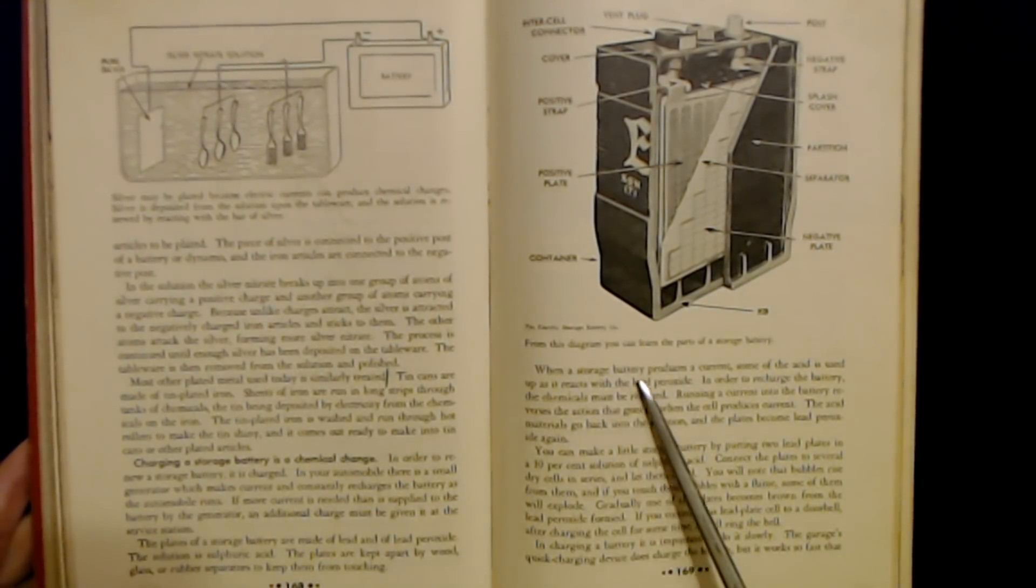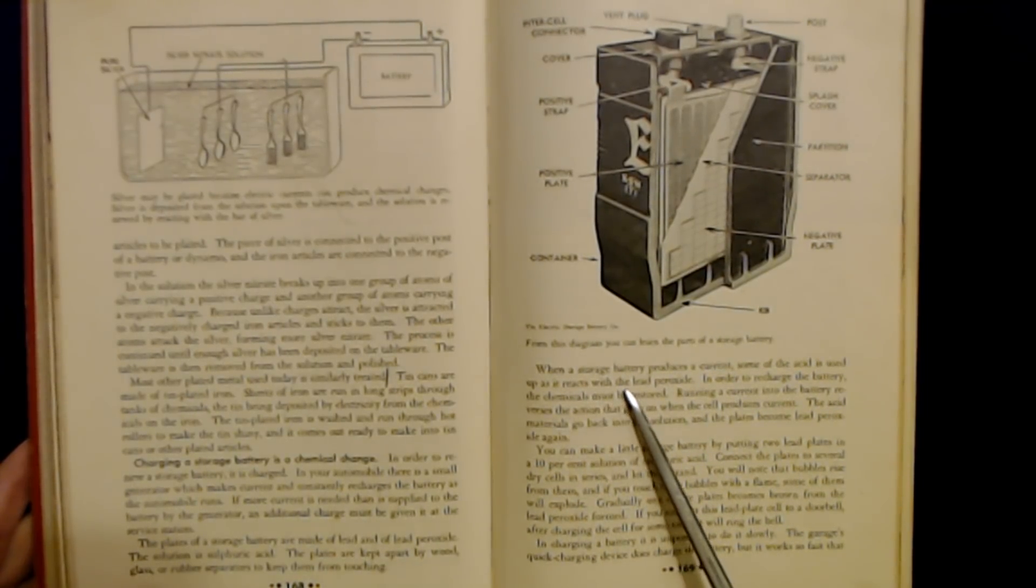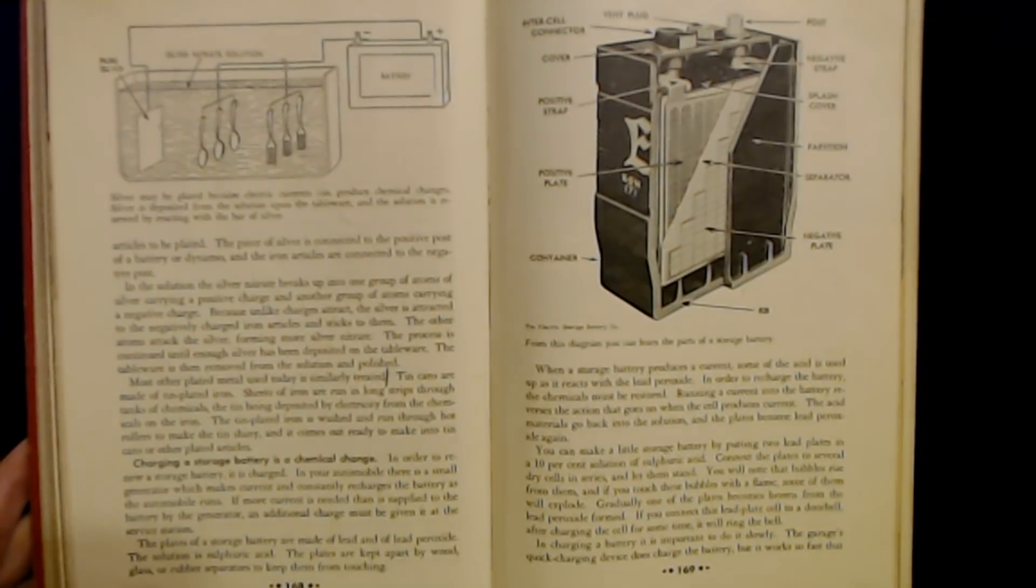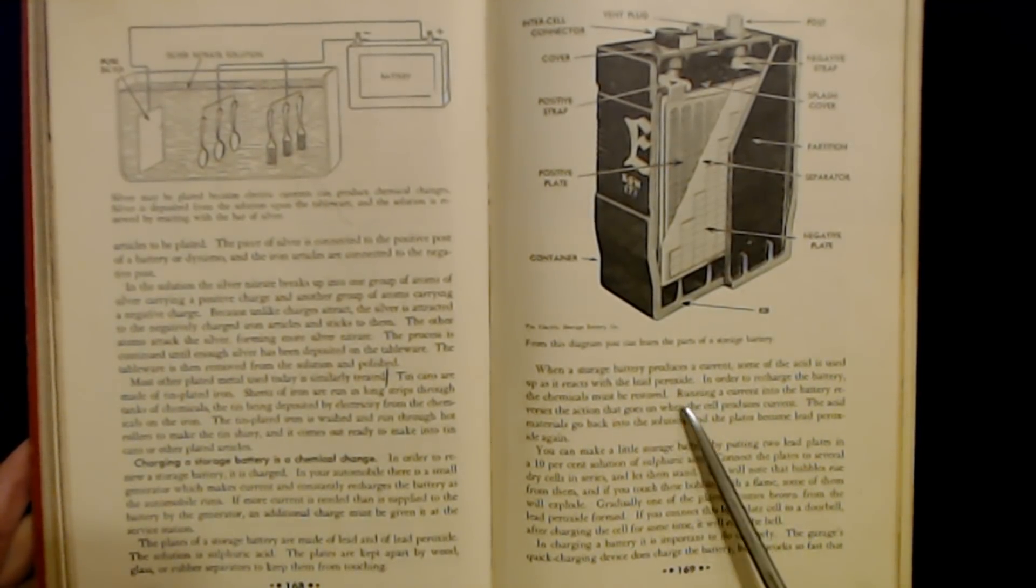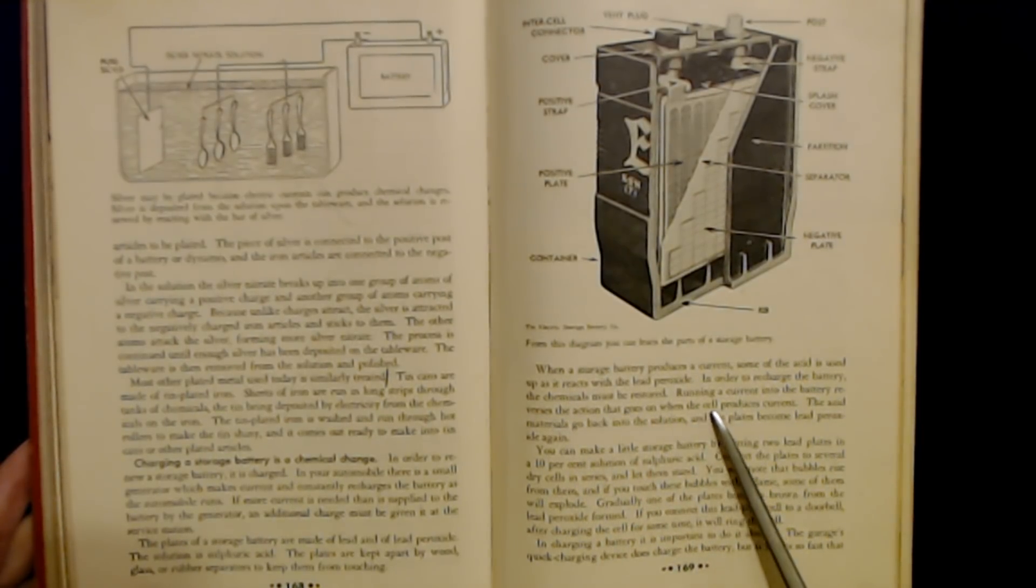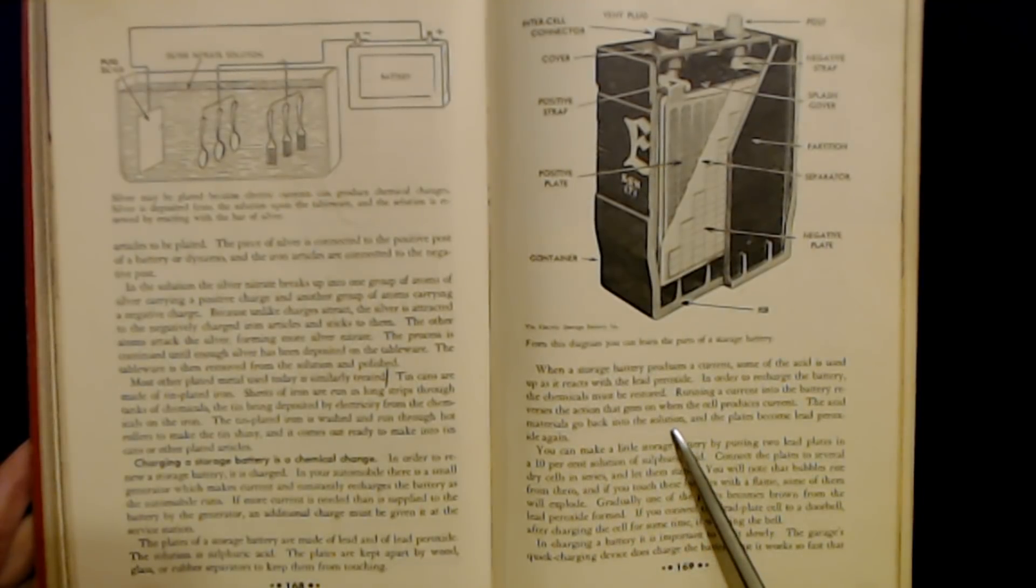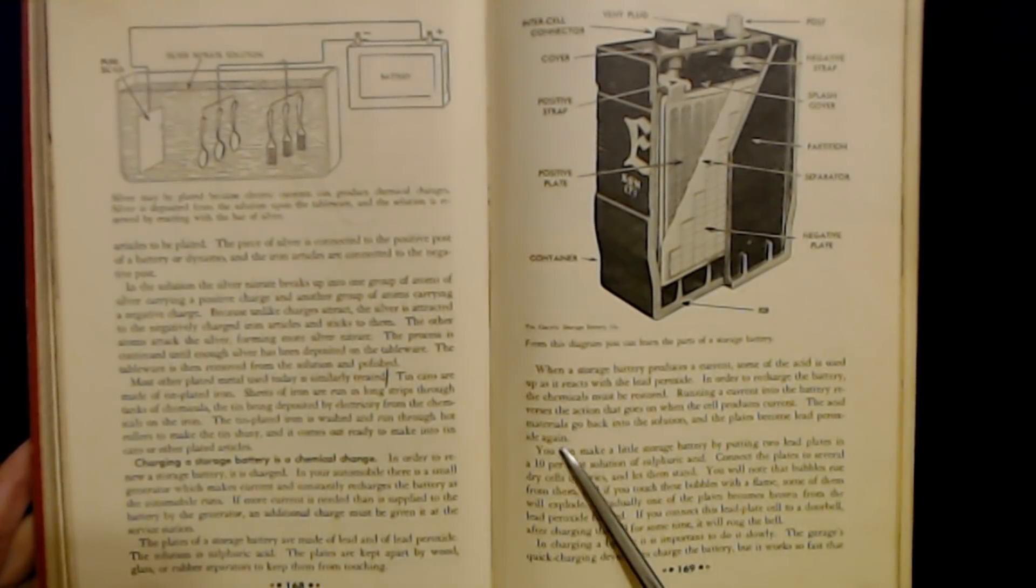When a storage battery produces a current, some of the acid is used up as it reacts with the lead peroxide. In order to recharge the battery, the chemicals must be restored. Running a current into the battery reverses the action that goes on when the cell produces current. The acid materials go back into the solution and the plates become lead peroxide again.